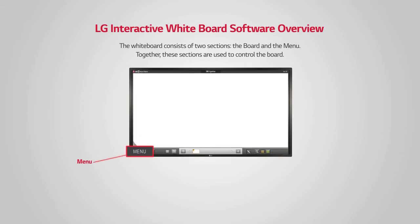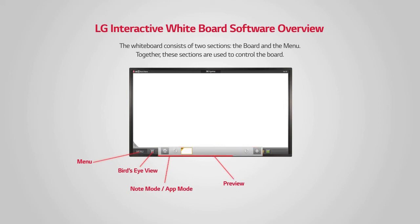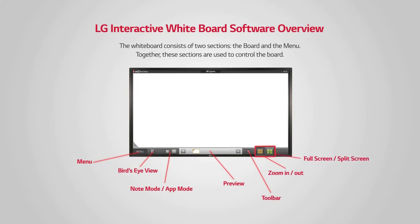The menu contains many different functions. The menu button allows you to access various configurations. For example, bird's eye view allows you to see the whole page that you are working on. The note mode or app mode function allows you to switch between note mode and app modes. Preview mode shows thumbnail images of all the working pages. You can also use the toolbar, zoom in or out, and full screen or split screen functions to change the configuration of the screen.